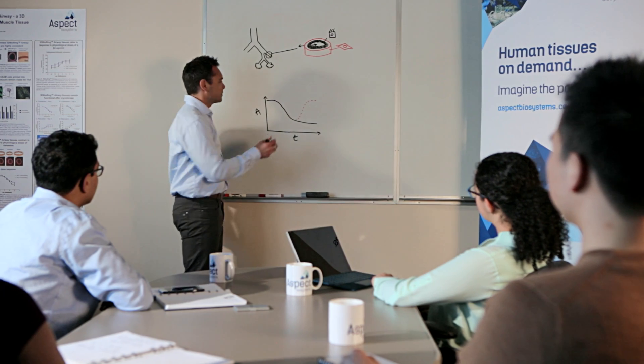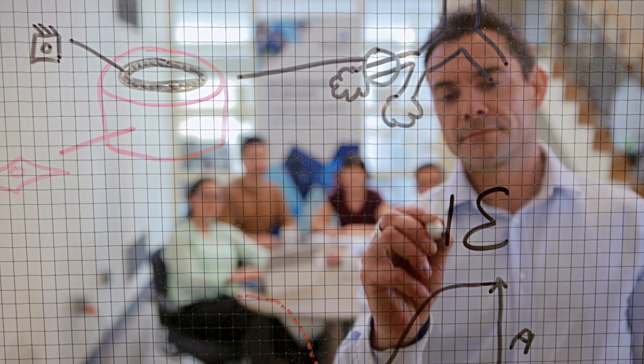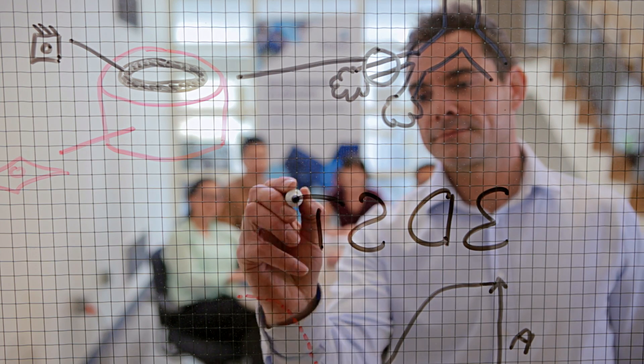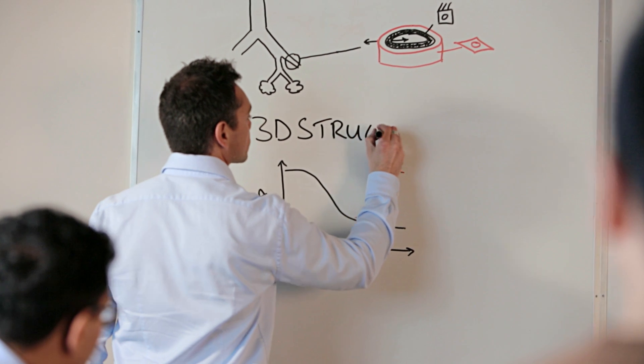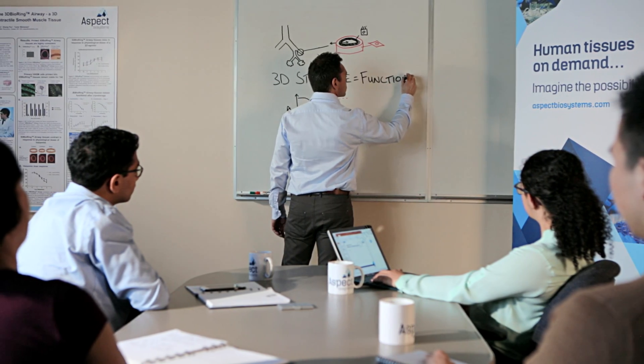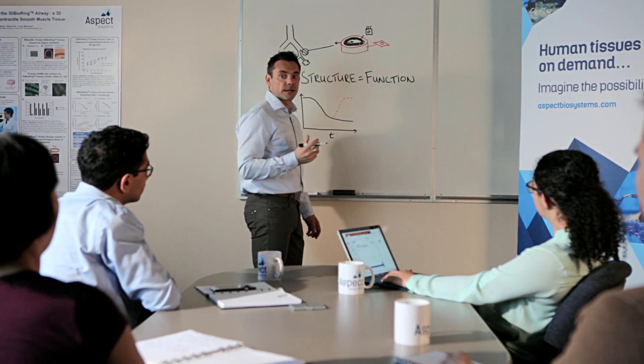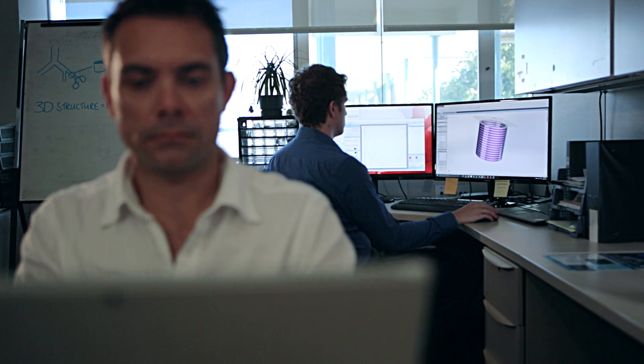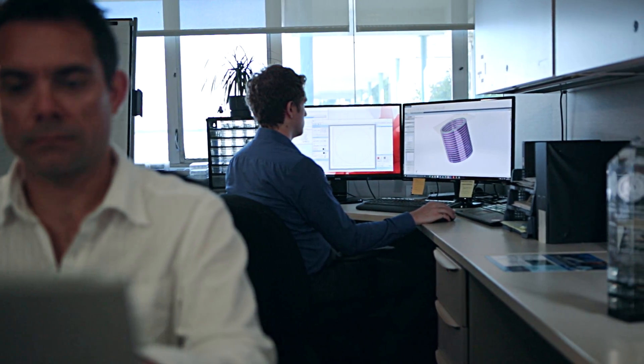Developing a useful 3D tissue begins with defining how the tissue should function, then conceptualizing how to construct the tissue to display the desired functions. Generating a biologically relevant 3D structure is essential to recreating lifelike function.